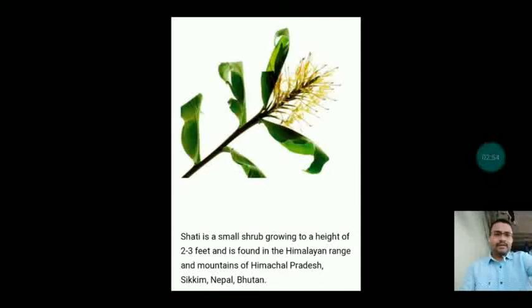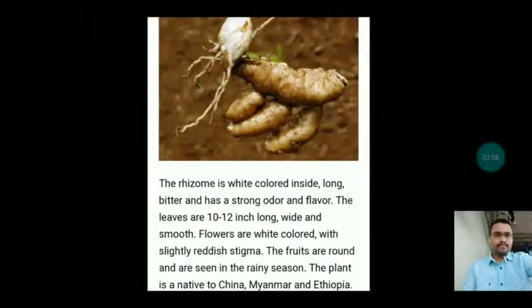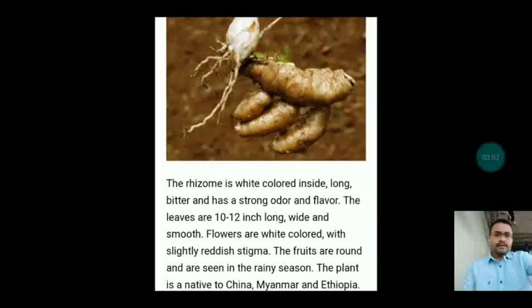Regarding the habit of Sati, it is a small shrub growing to a height of two to three feet. It is found in the Himalayan range and mountains of Himachal Pradesh, Sikkim, Nepal and Bhutan. The rhizome is white colored inside, long, bitter and has a strong odor and flavor. The leaves are 10 to 12 inches long.